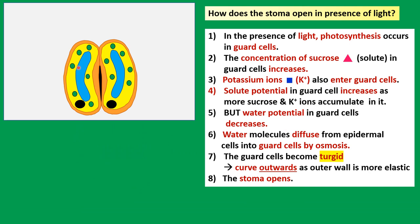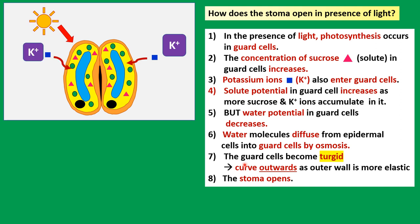In the presence of light, photosynthesis occurs in the chloroplasts in the guard cells, so glucose is produced and then converted into sucrose. The concentration of sucrose — denoted by the red triangles — in the guard cells increases. Additionally, potassium ions — denoted by the blue squares — enter the guard cells by active transport. These two events cause the solute potential in the guard cells to increase, as more sucrose and potassium ions accumulate.